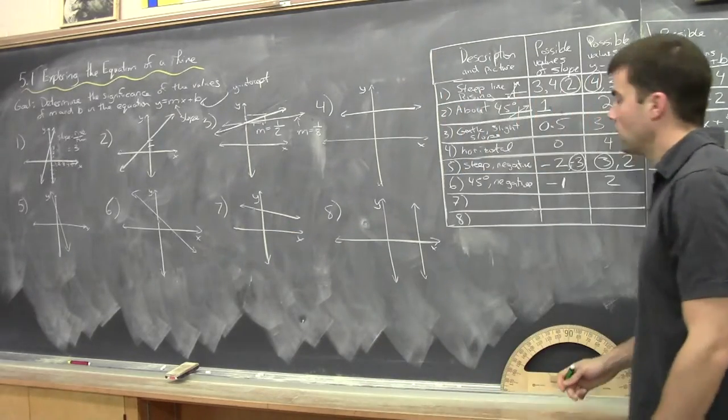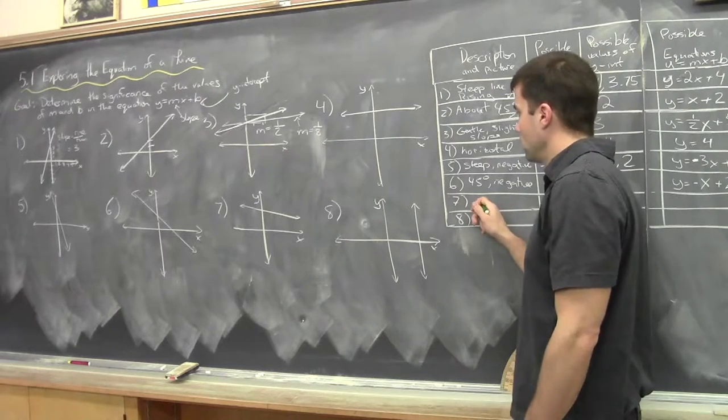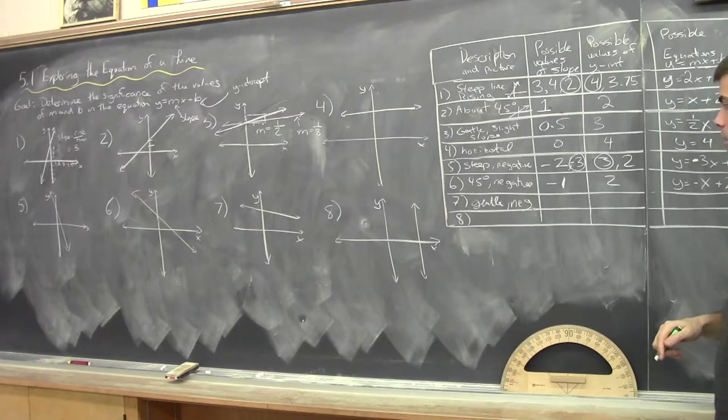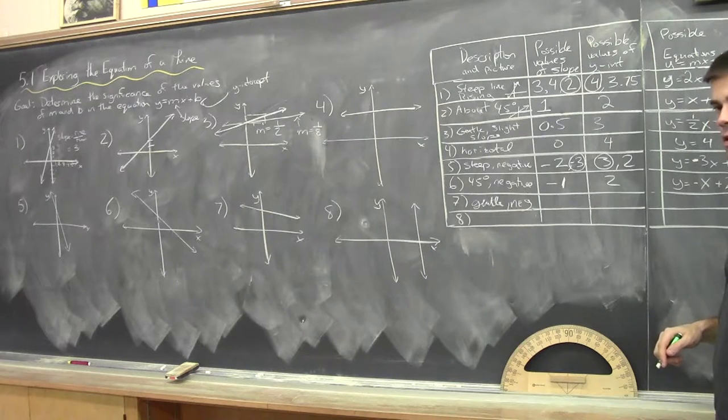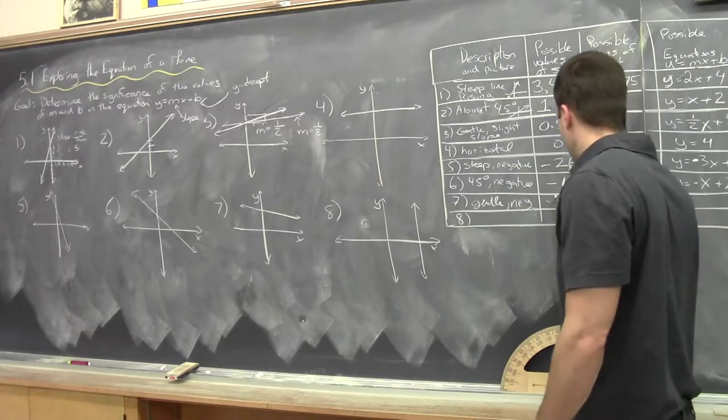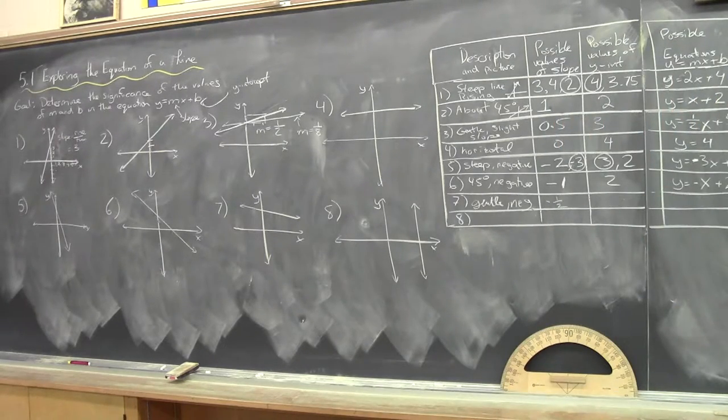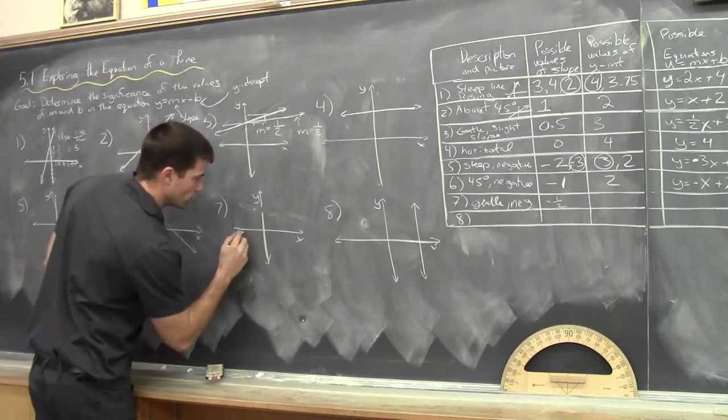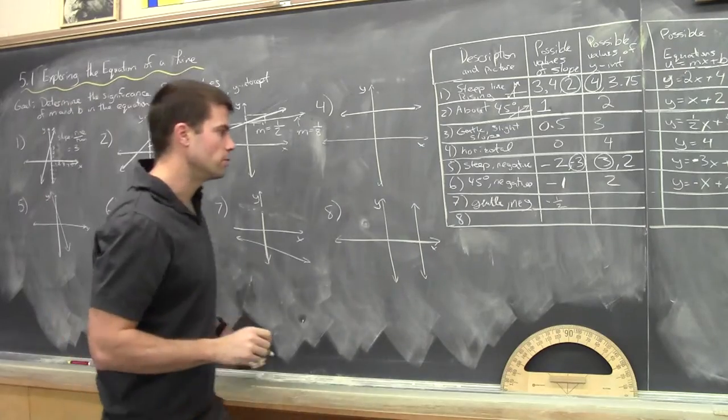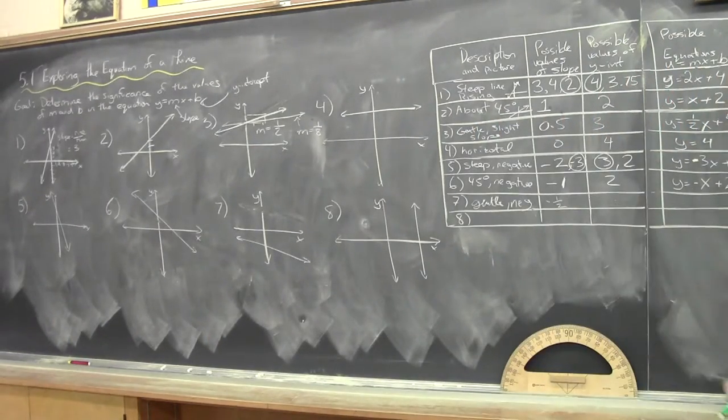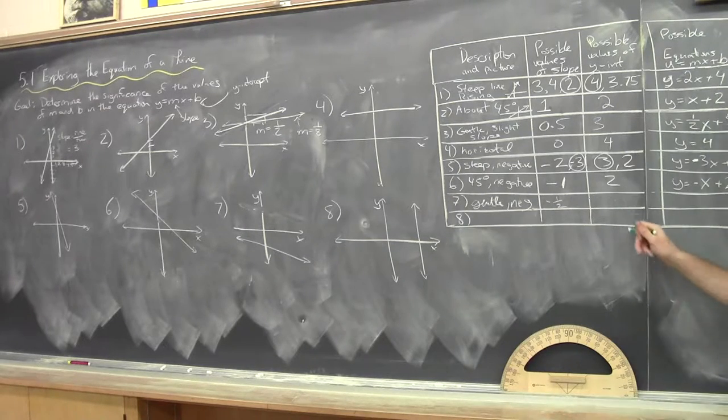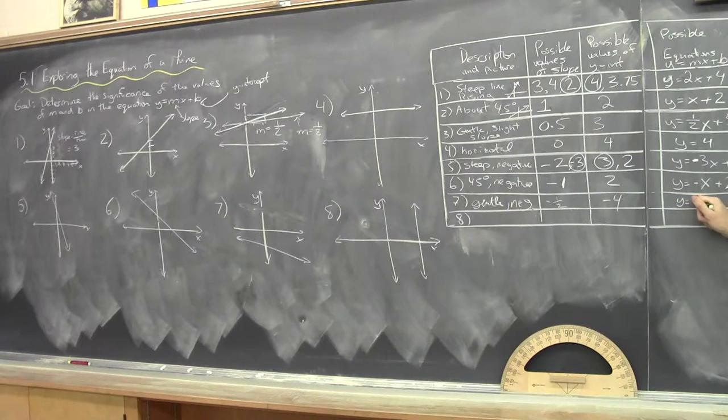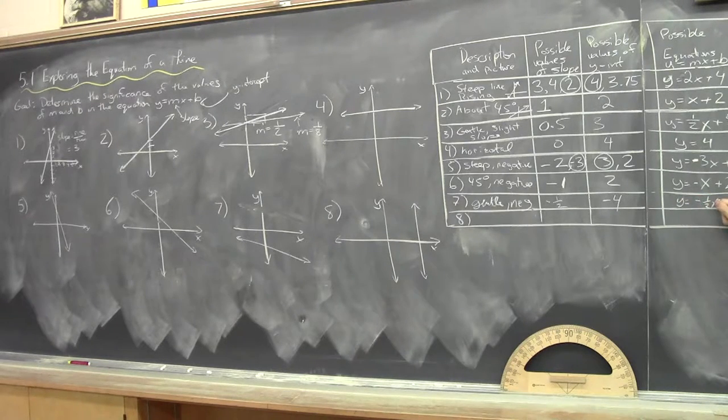Okay. Kevin. What's the description? 45 degrees. Negative. Good. 45 degrees negative. Possible values of the slope. If it's 45 degrees. So, you can see these two distances are the same, right? It's different. It's lowering the same amount that it's running. So, we know that our slope has to be negative one. It's 45 degrees. Possible values of the y-intercept? One. Two. Sure. Yeah. One, two. That works. And the equation. Y equals negative one x plus two. Good. Don't have to show that one. You can just put x.